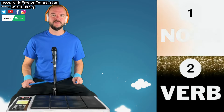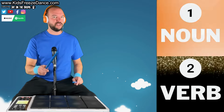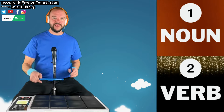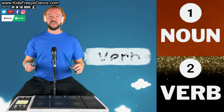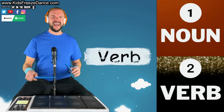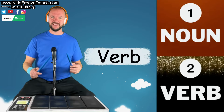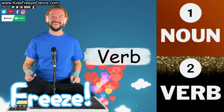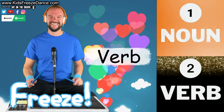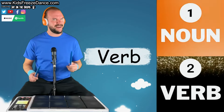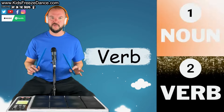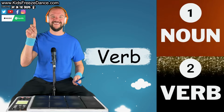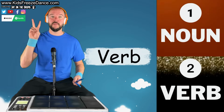Alright, now here are the rules. When I start the drumbeat, your job is to be dancing and moving around. As you're moving, I'm going to put up a word on the screen, and it's your job to look at that word and decide: is it a noun, or is it a verb? I want you to freeze when you hear this sound. When you hear that, you should have decided noun or verb. Now, when you freeze, if you think it's a noun, put up a number one. And if you think it's a verb, put up a number two.